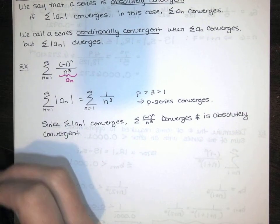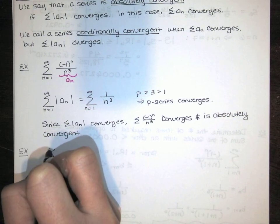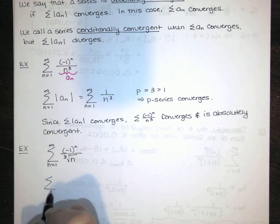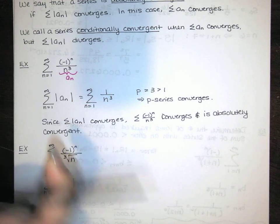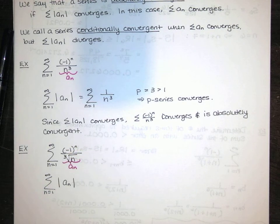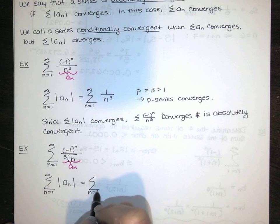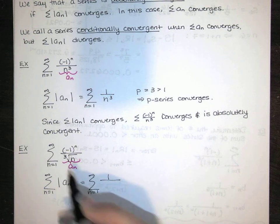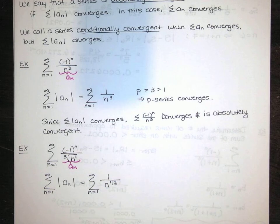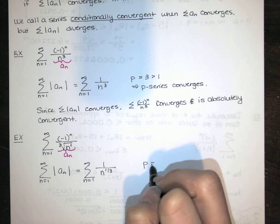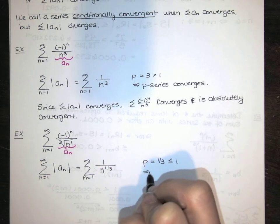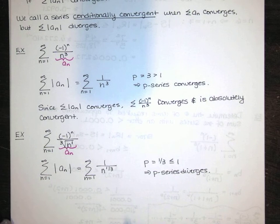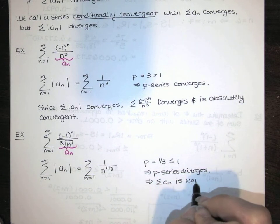So that works out nicely — it's pretty handy. Now let's say the series looks like a p-series but the corresponding p-series diverges. If I look at the series of absolute values, the absolute value of negative 1 to the n is 1, and we're dividing by the cube root of n, which I can write as n to the 1/3 power. Here p is 1/3, and since 1/3 is less than or equal to 1, this p-series diverges. Since this p-series was the series of absolute values of a sub n, that means the original series is not absolutely convergent.